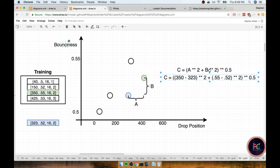We would then take the difference in the bounciness between the two as well. So that would be 0.55 minus 0.52. And we would square that as well. We then add those two sums together and then take the square root of the entire thing.